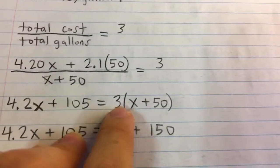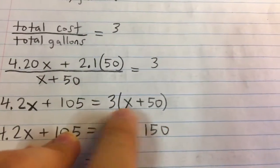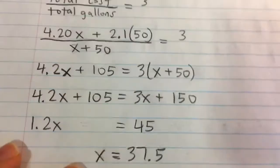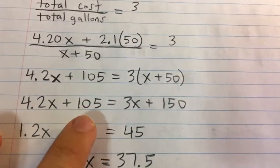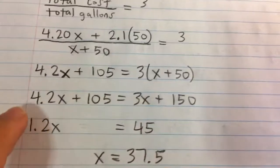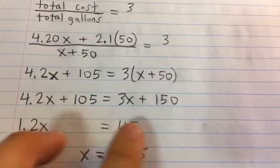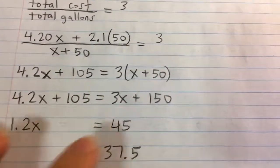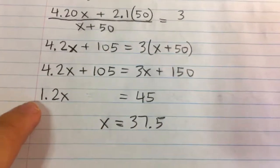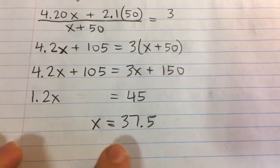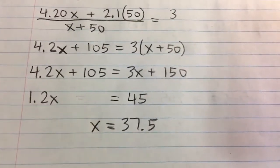Then I distribute the 3 multiplied by x and then plus 3 multiplied by 50. Now I'm going to subtract 3x from both sides, so I collect all the x's on the left side of the equation, 1.2x, and subtract 105 from both sides, so I get 45 on the right side of the equation. Now I divide both sides by 1.2 and I get x equals 37.5.